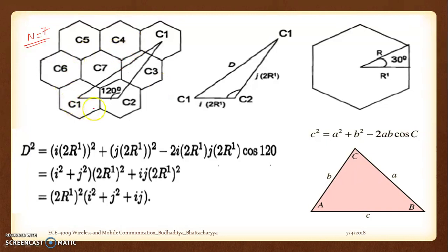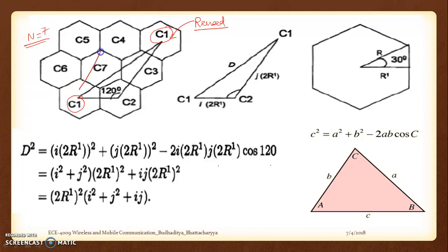You can see 7 cells here and there is a reuse cell somewhere. We know it is a reuse cell because c1 is the index — c1 is here and has been repeated somewhere over here. In that way, going back once again, it is i times in one direction and j times in another, so i = 2 and j = 1, or j = 1 and i = 1, whatever we do.